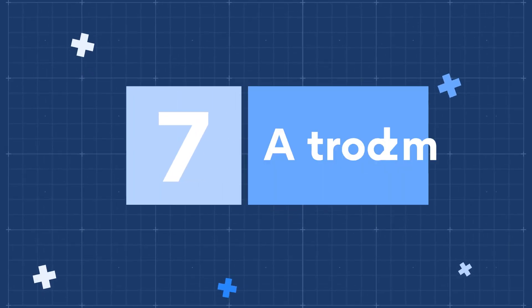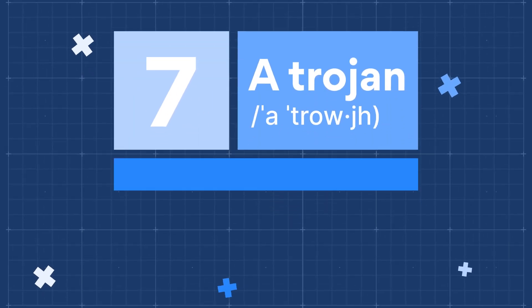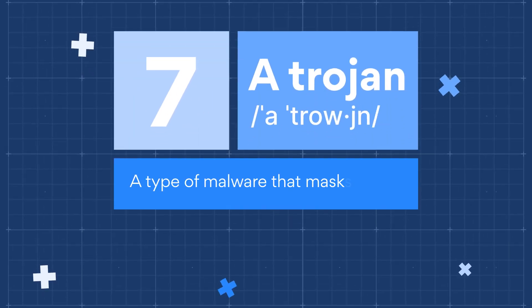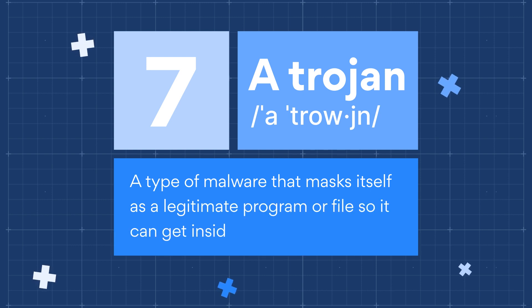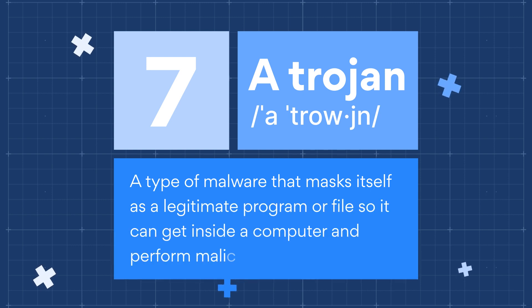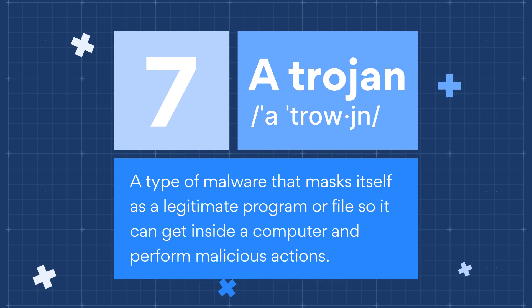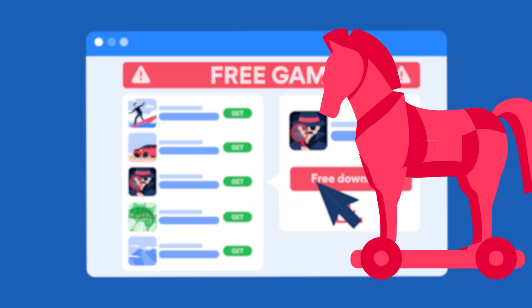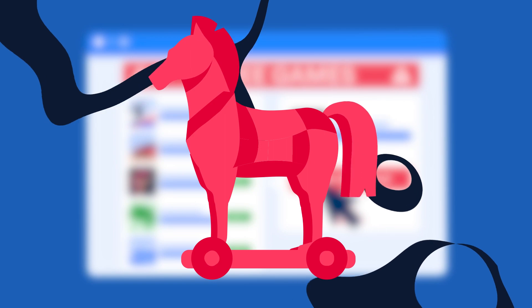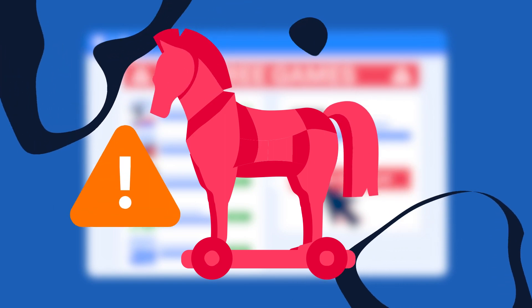Number 7: A Trojan. Also known as a Trojan virus or a Trojan horse, a Trojan is a type of malware that masks itself as a legitimate program or file so it can get inside a computer and perform malicious actions.